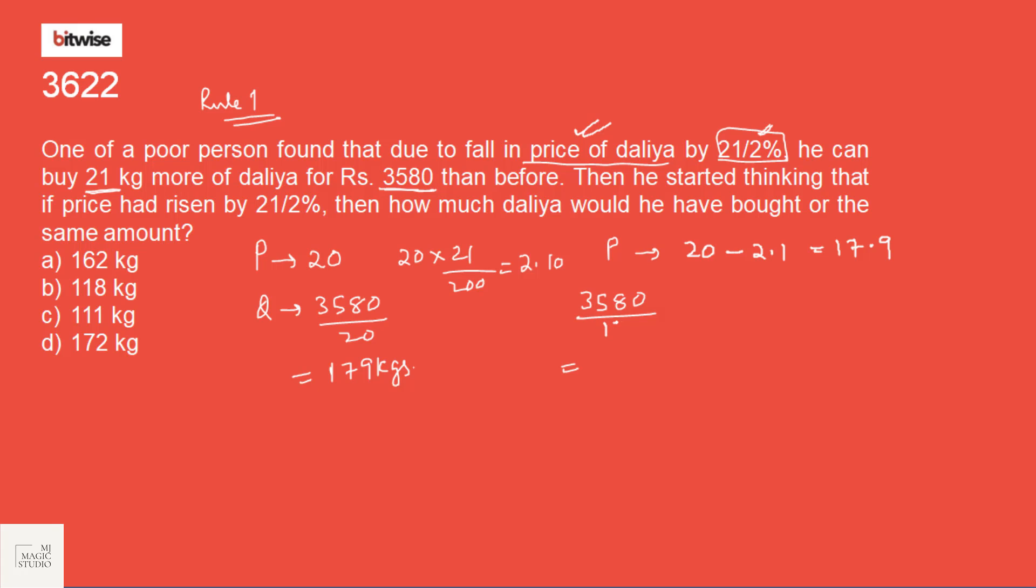So new price is 20 minus 2.1. That is 17.9. So new quantity purchase is 3580 by 17.9. This is 200 kgs. Bingo. The difference between these two is 21 kgs. That means whatever price we have taken is actually the price initially. So initial price of Dahlia was 20. Then he started thinking that if price have risen by 21/2%, that means if new price is 20 plus 2.1, that is 22.1. Then how much Dahlia would he have bought for the same amount. Here we need 3580 by 22.1 and this will come close to 162 kgs. Option A will be the fit here.